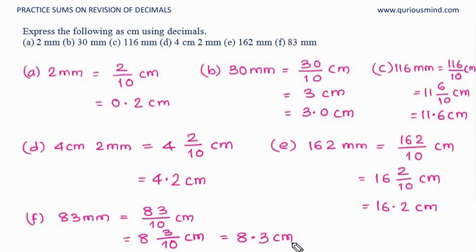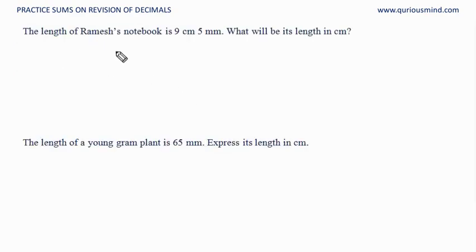Let's do the next one. The length of Ramesh's notebook is 9 centimeter 5 millimeter. What is his length in centimeter? We want in centimeter. 9 is a whole. After whole we get decimal point, and 5 mm. When we want to convert 5 mm into centimeter, that is equal to 5 upon 10 centimeter. 5 tenths. So the tenth is 5. 9.5 centimeter.